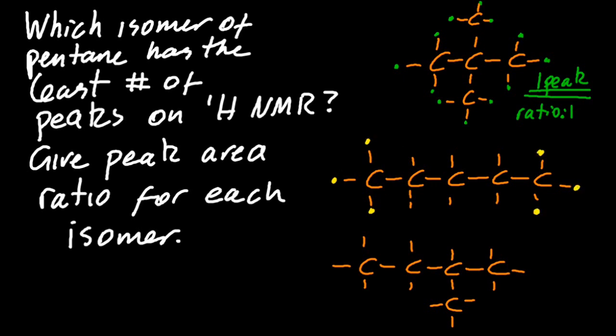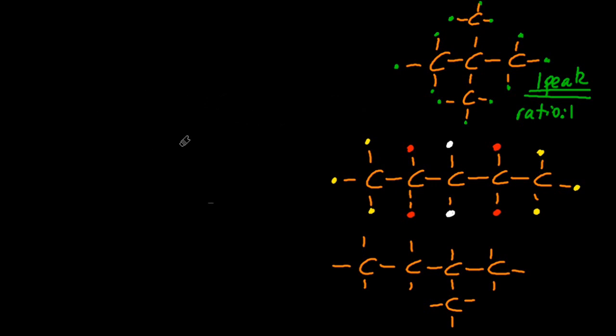These three yellow are the same as the other three yellow. The reds are in the same environment, and the whites are also. So that gives me three different hydrogen environments, three different peaks. And you might think the ratio is 6 to 4 to 2, and you'd be right, but let's make it simpler. Put it 3 to 2 to 1. Let's simplify that.